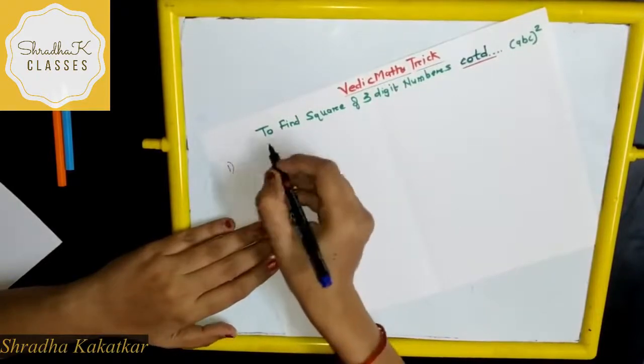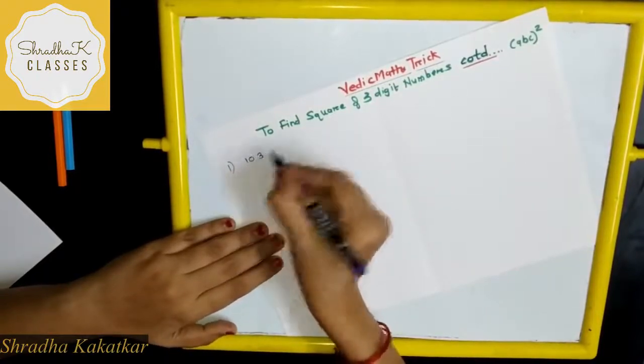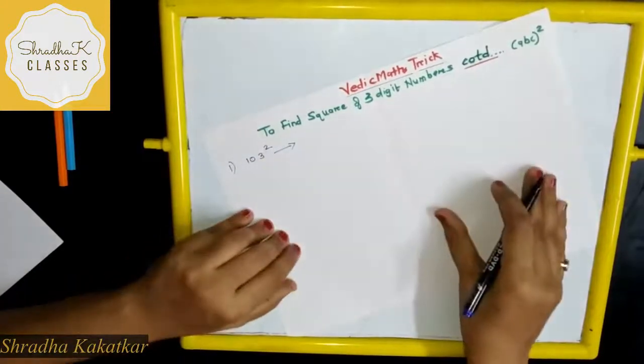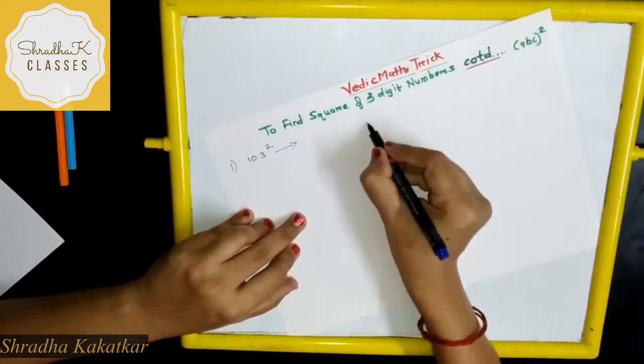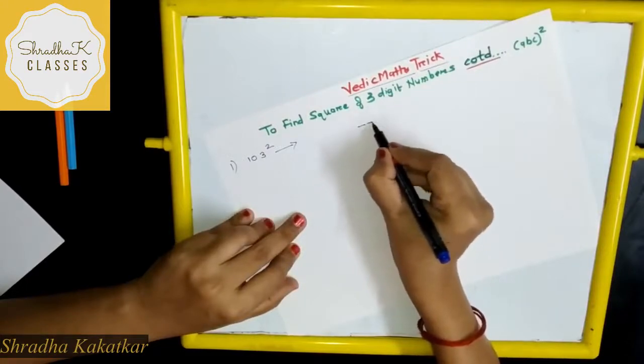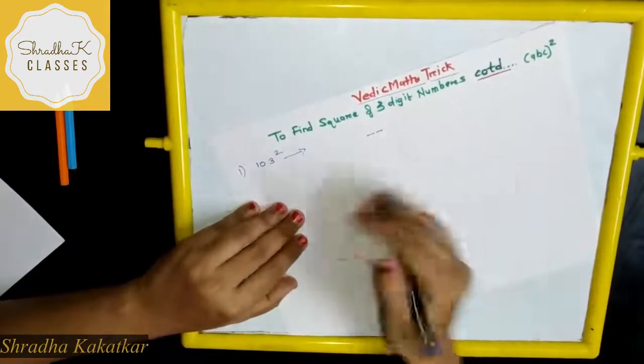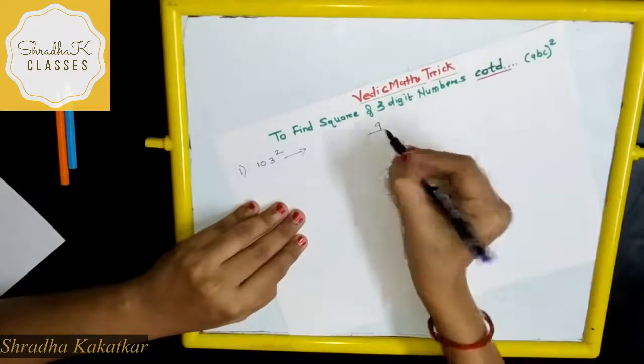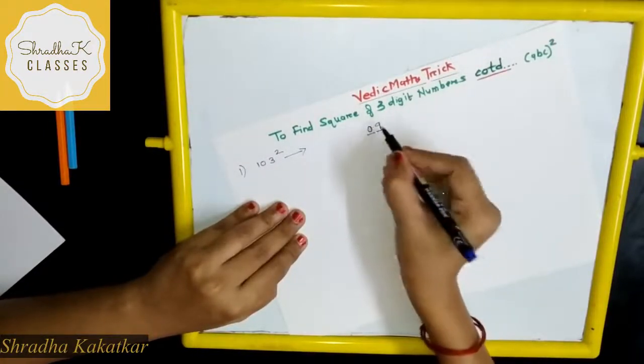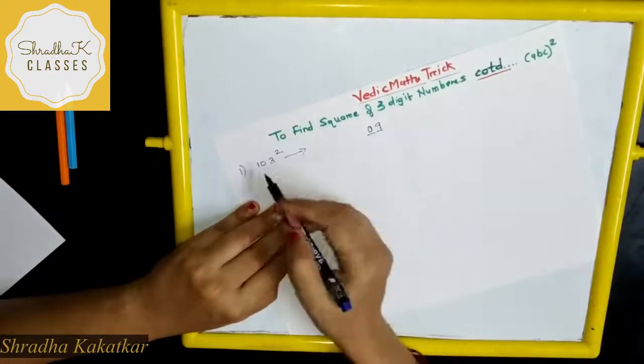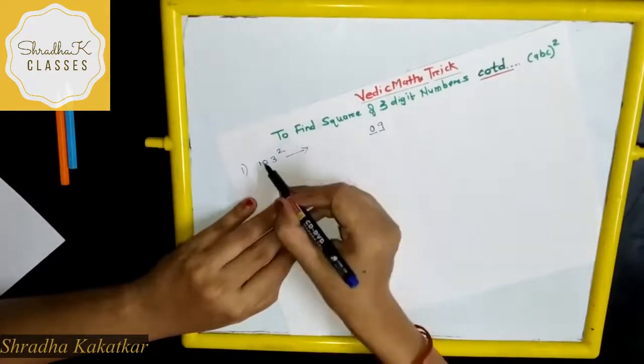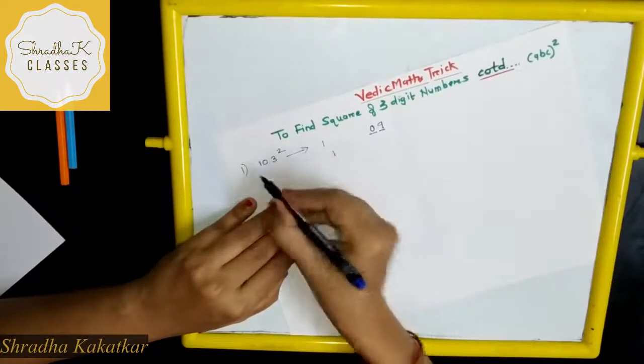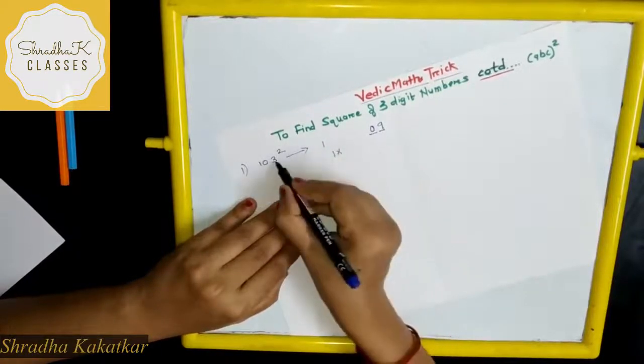Let's take the number 103 and find 103 square. Now what we have to do is the same way as before. First, we use two dashes representing two digits. What is 3 square? 9. So I write 9 and I will add zero as a second digit. Now 1 square is 1.